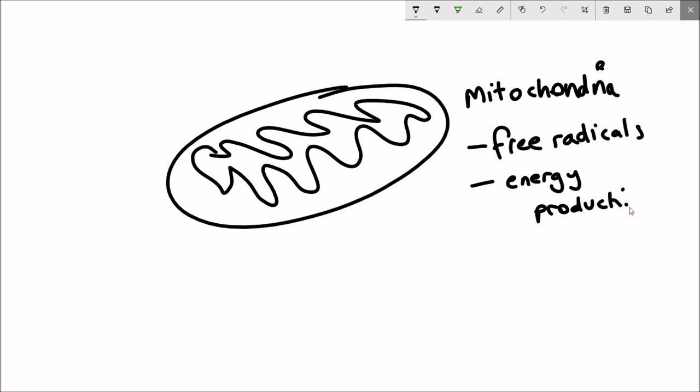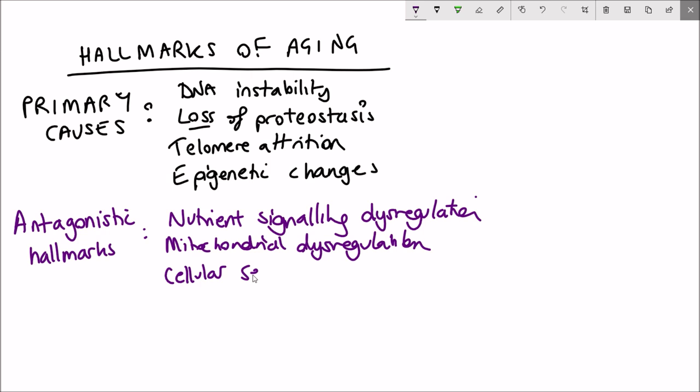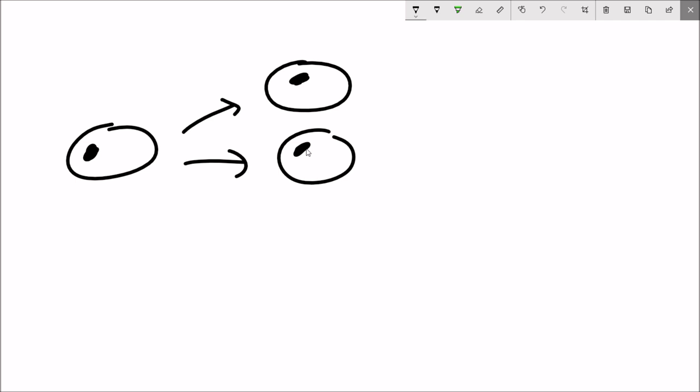The last antagonistic hallmark is cellular senescence. Cellular senescence can be defined as a cell state whereby the cell no longer divides, it stops replicating. In addition...